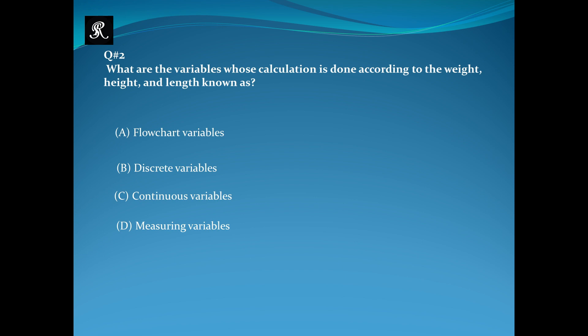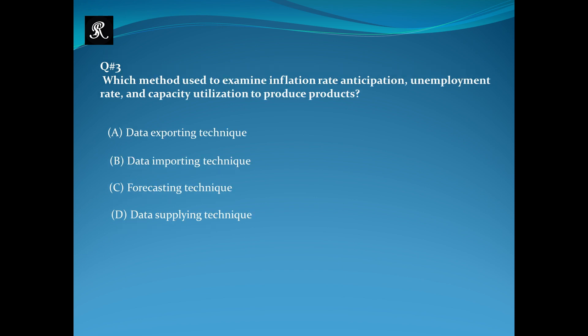Which method is used to examine inflation rate anticipation, unemployment rate, and capacity utilization to produce products? We are given four options: (A) Data exporting technique, (B) Data importing technique, (C) Forecasting technique, (D) Data supplying technique. The right option is C, forecasting technique.